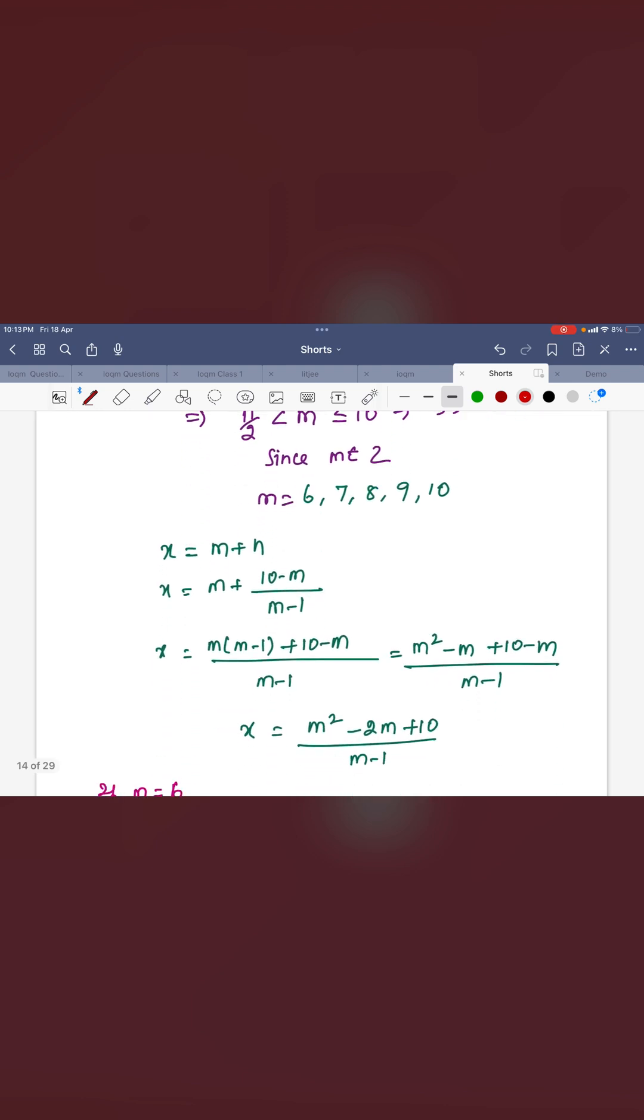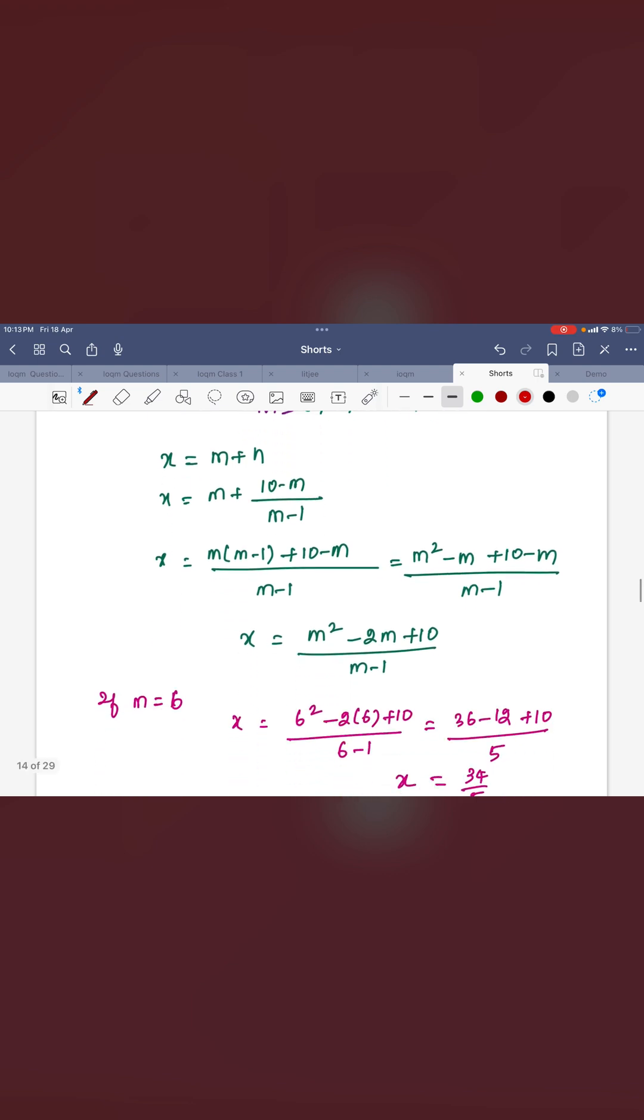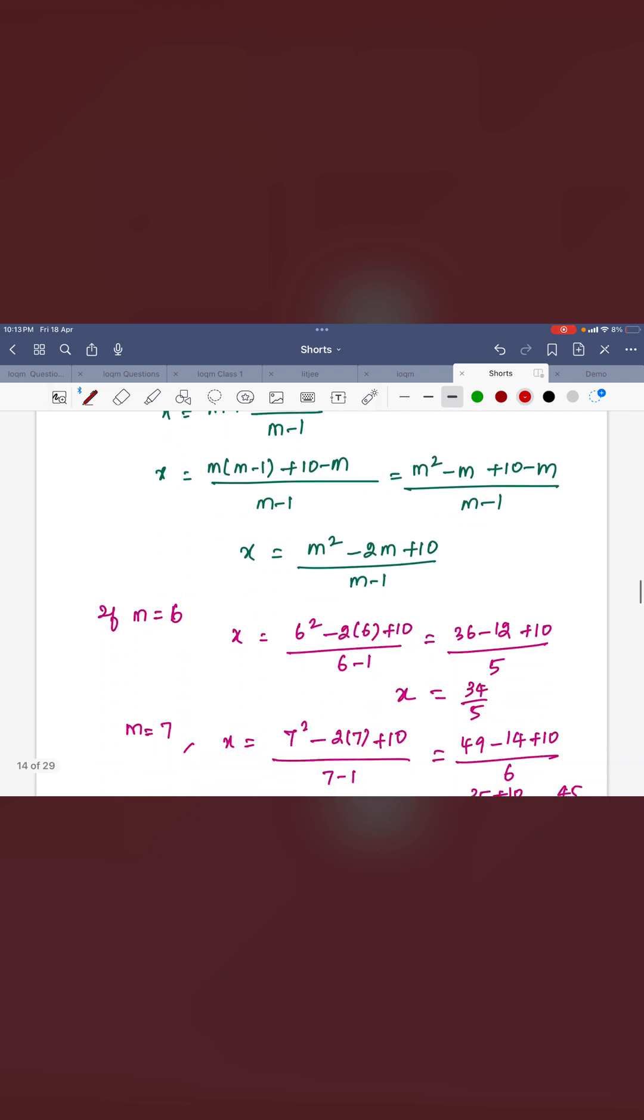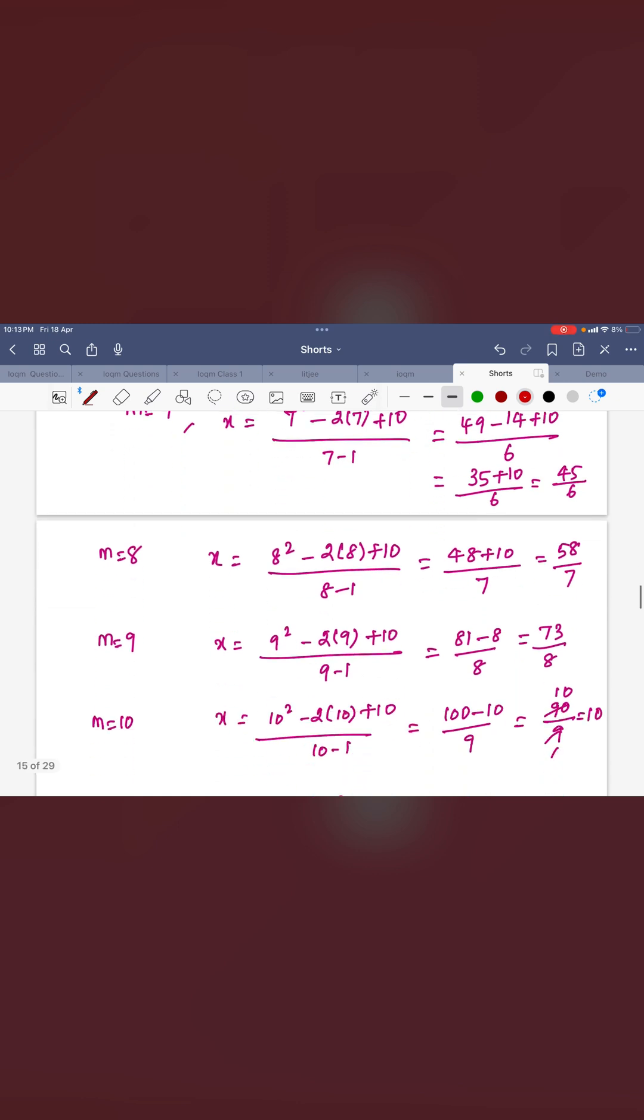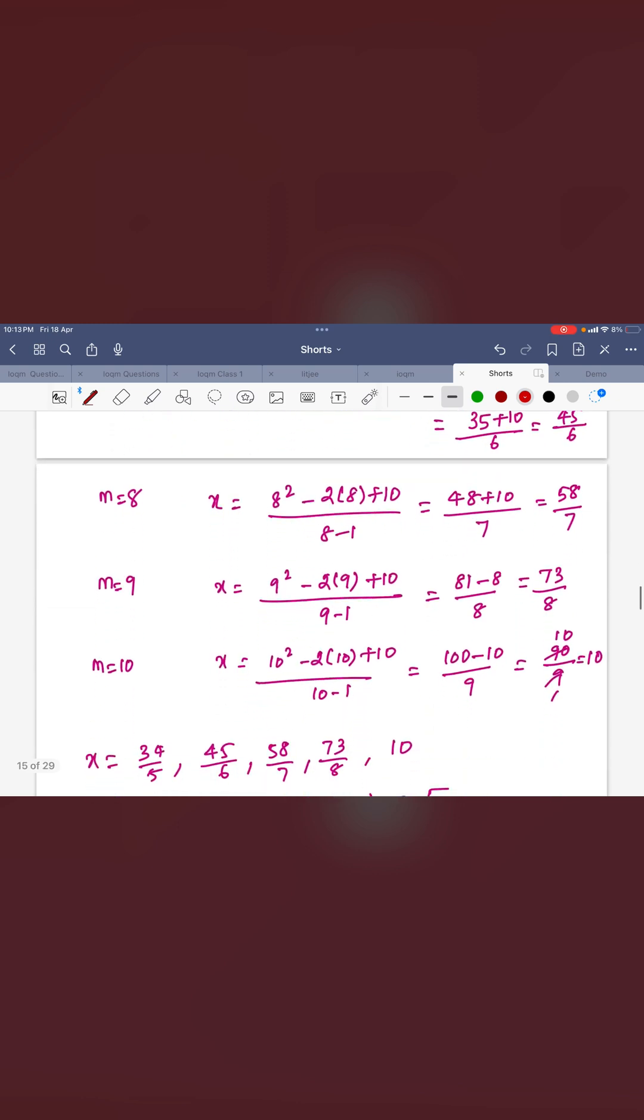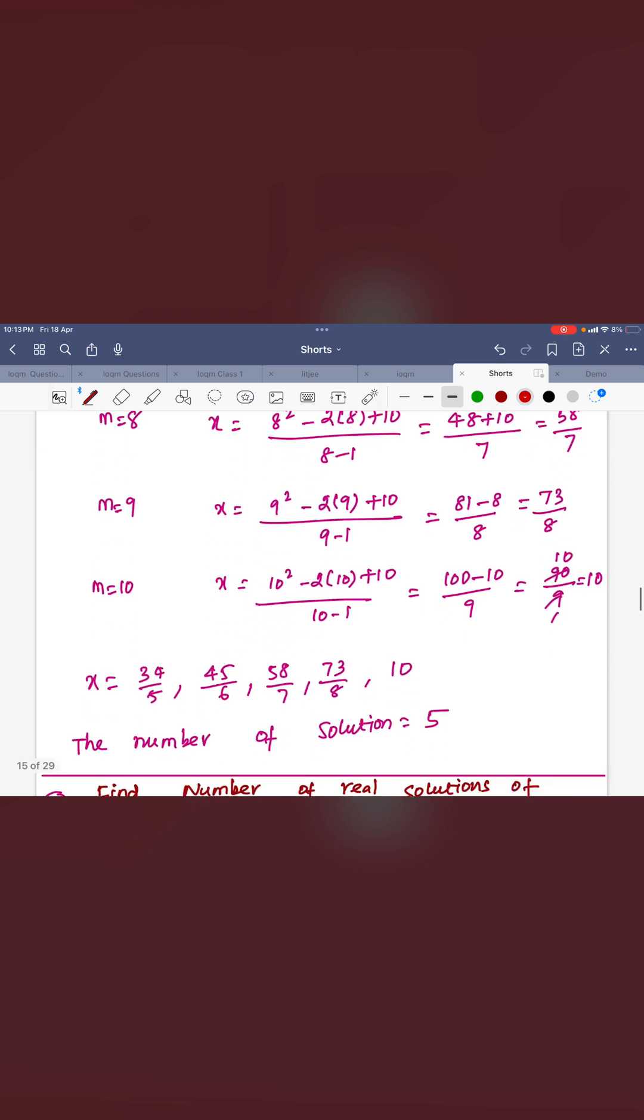Just you can substitute it here. First, you have to write x in terms of single variable. So, I am converting everything in terms of greatest integer function. Here m is the greatest integer function. You can substitute m is equal to 6, 34 by 5 you will get. Same way m is equal to 7, 45 by 6. m is equal to 8, 58 by 7. m is equal to 9, 73 by 8. m is equal to 10, 10.